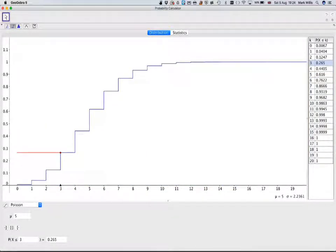we need to do 1 minus this area here using the CDF function. So we need to know 1 minus this value here. This value here for 2, 0.1247.